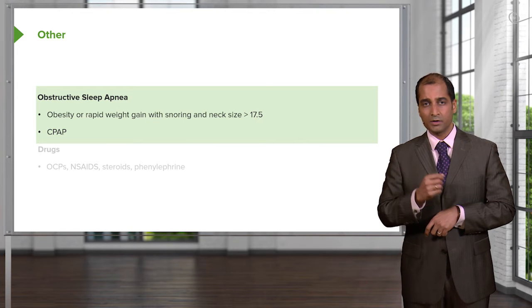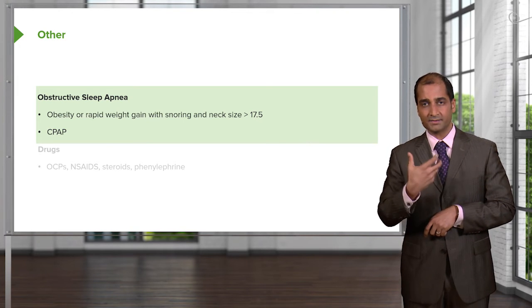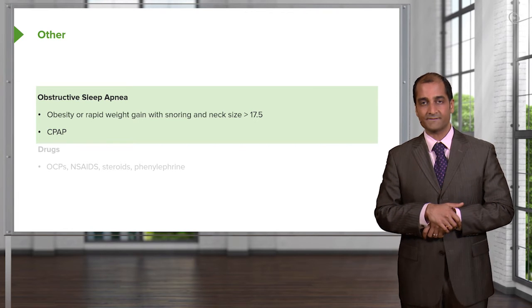So now what happens? Obesity, rapid weight gain with snoring, neck size greater than 17 and a half centimeters.